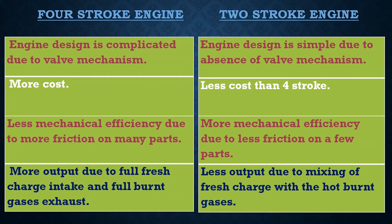There is more output in a four stroke engine due to full fresh charge intake and complete exhaust of burnt gases. In a four stroke engine, fresh fuel enters the chamber only after complete scavenging of the burnt fuel. But in a two stroke engine, when the burnt fuel is scavenging through the exhaust port, simultaneously fresh fuel enters from the other side — burnt and fresh fuel mix together, more fuel is required, and output is less.